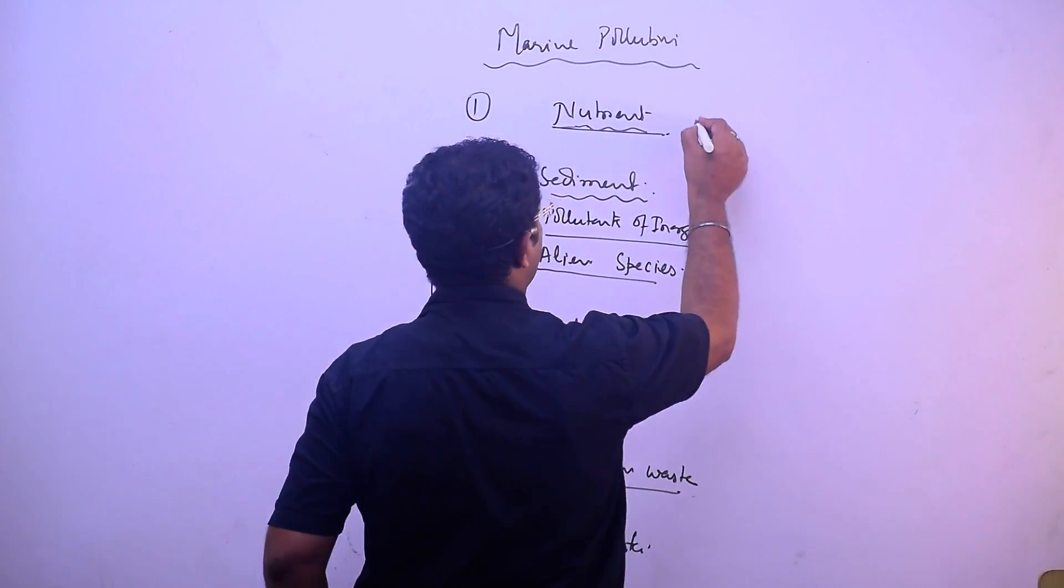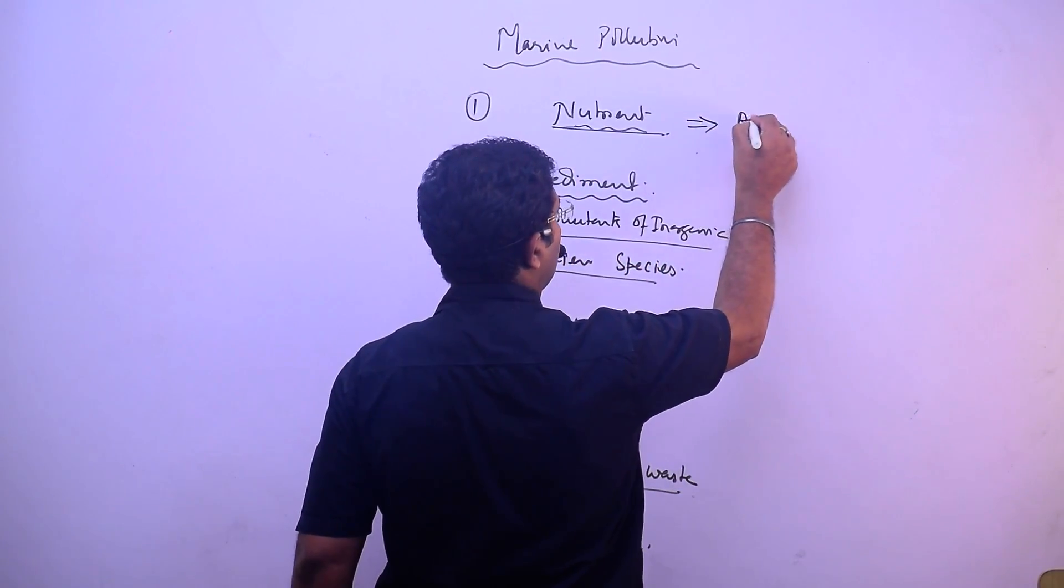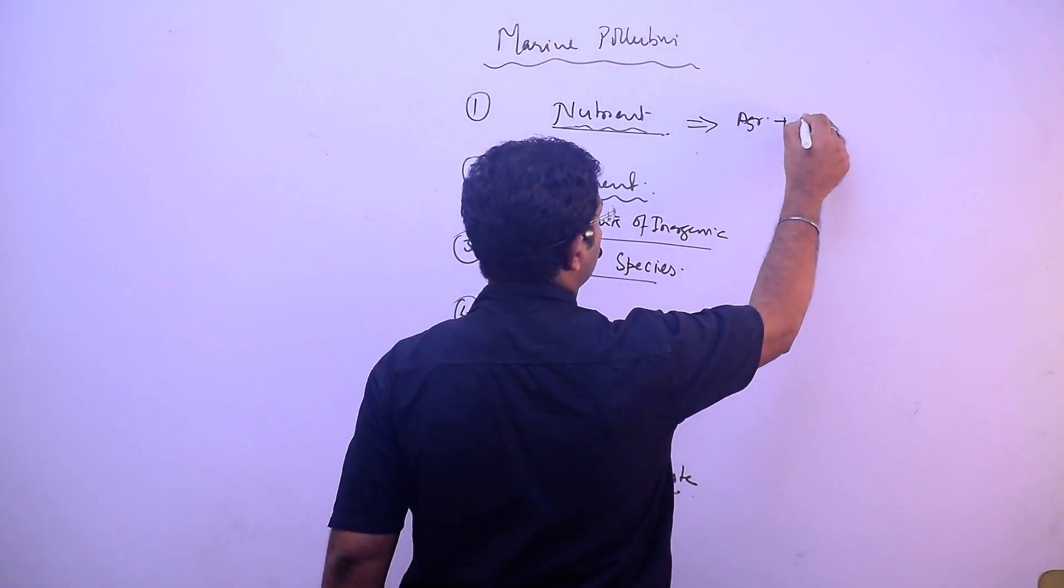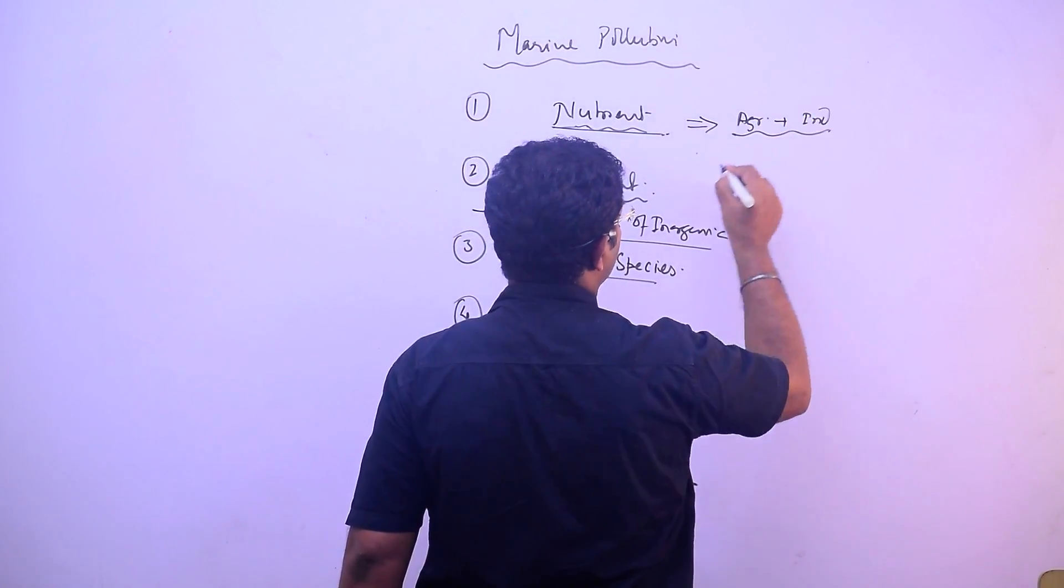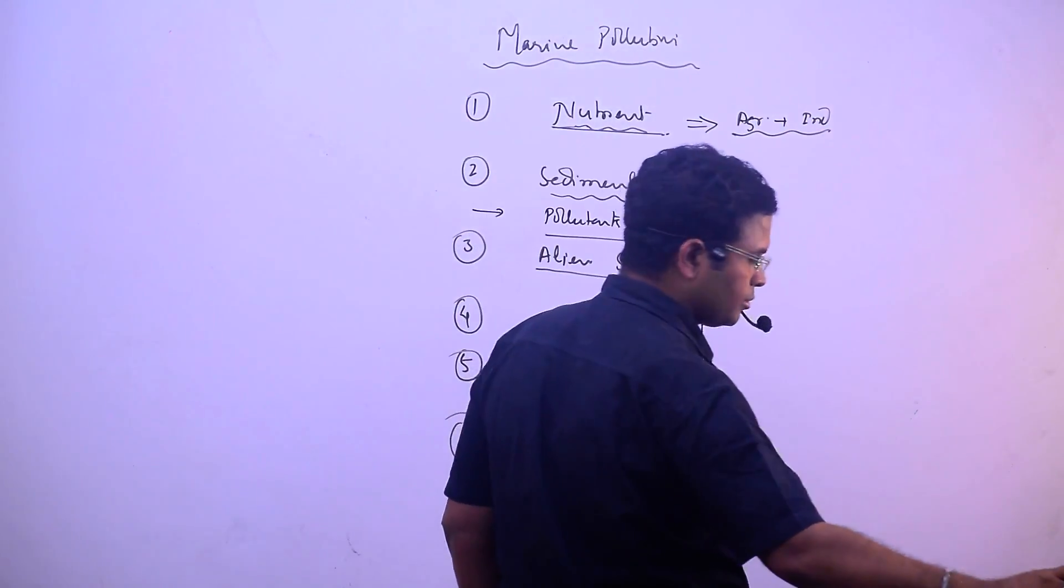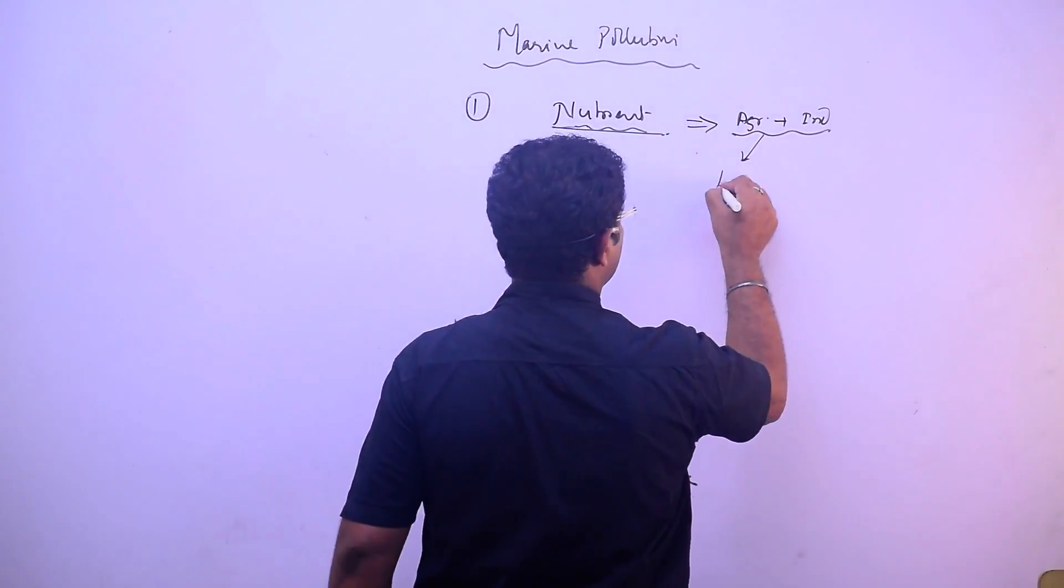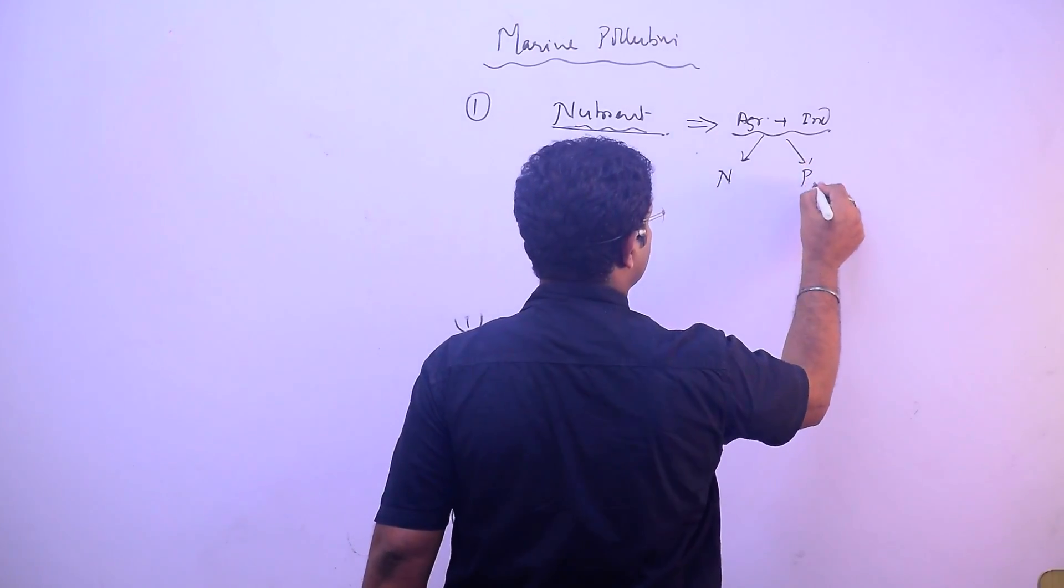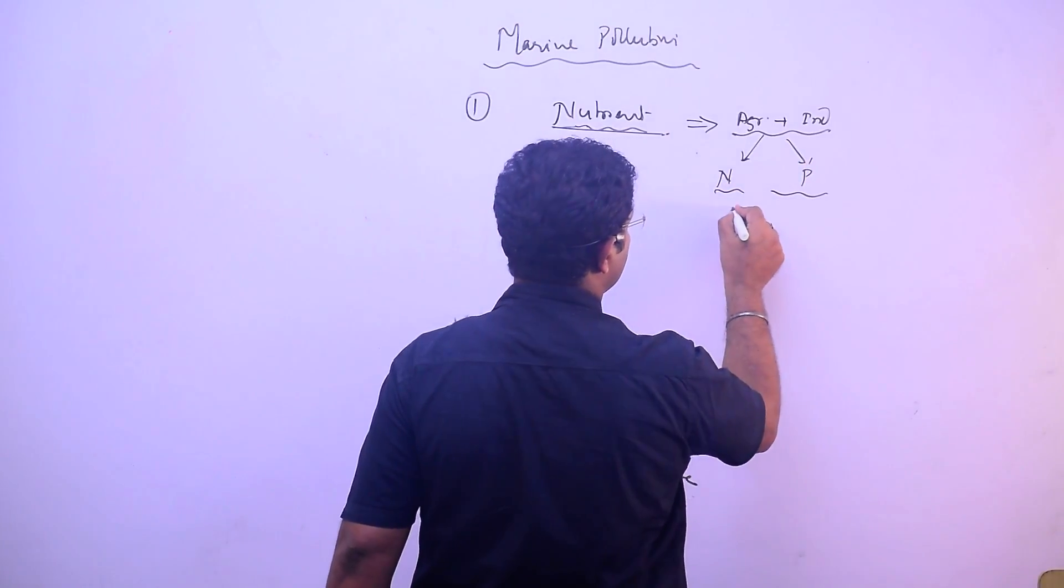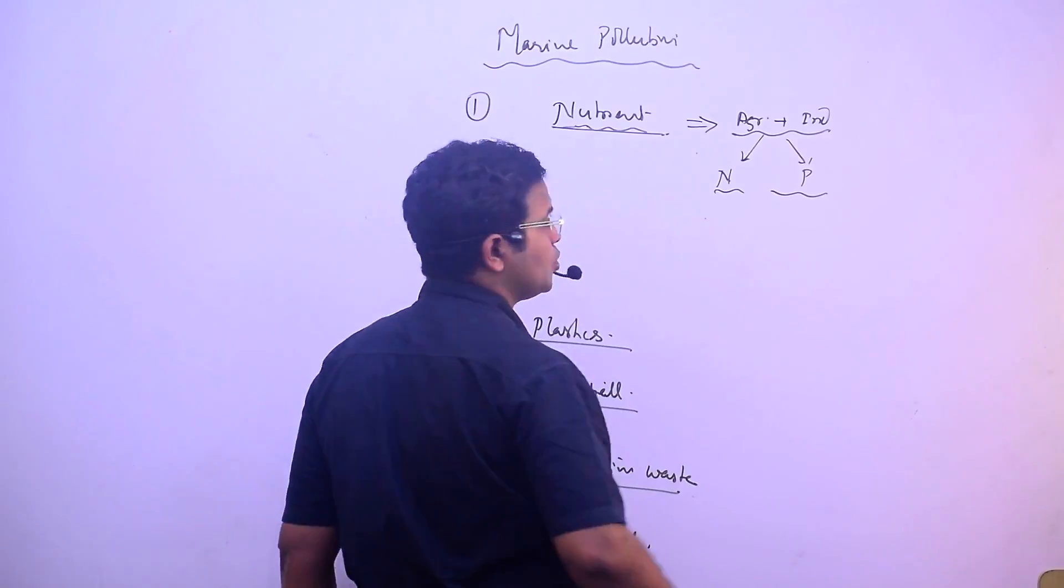In the marine pollution, from the agriculture area and from industry, what are the two things that can come? Nitrogen and phosphorus. This is known as nutrients.